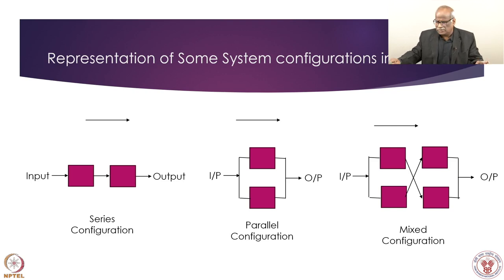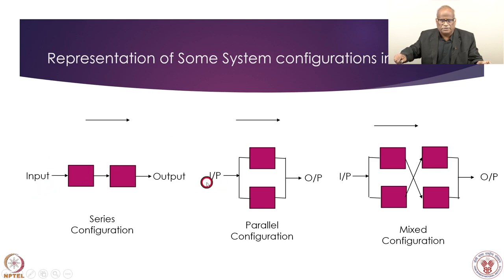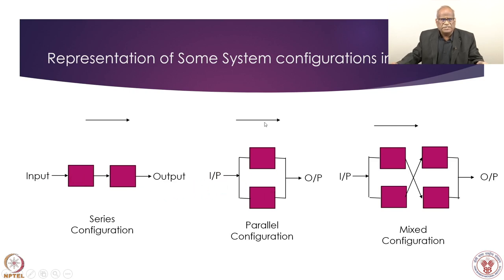The process, as shown by the arrow, is from left to right — in chronological order of how the components are placed. I have shown three configurations: series configuration, parallel configuration, and mixed configuration. As a system becomes more complex with more blocks and more connections, we go for mixed configuration. But that is the limit when we have to go for other methods. In the series configuration, there is an input arrow, then block one, block two, and then the output.